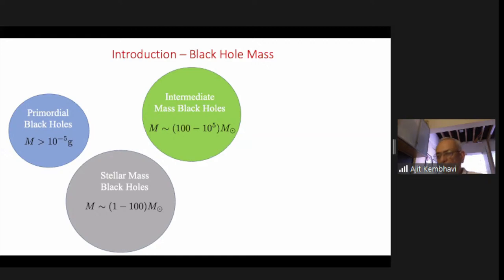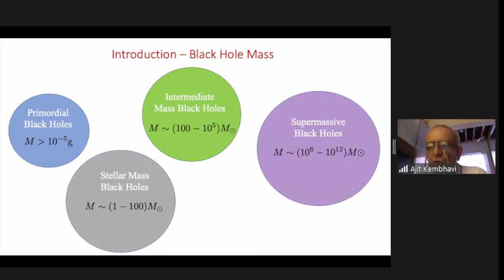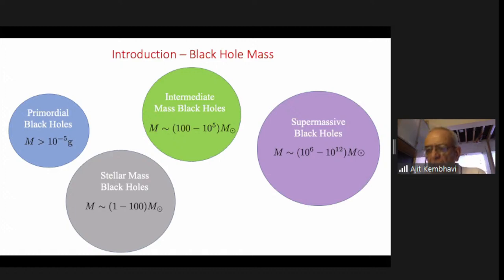Then of course we have the supermassive black holes, with a mass range roughly of a million solar masses to 10 to the 12 solar masses. We know that possibly all galaxies and all active galaxies harbor very compact, very massive objects.